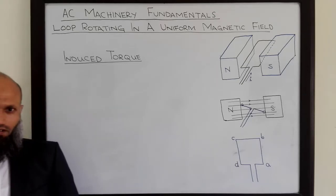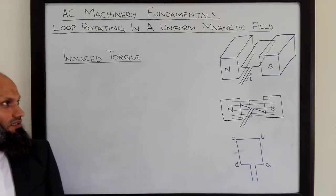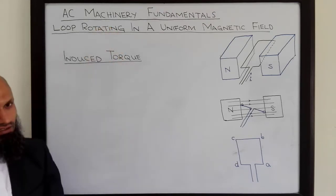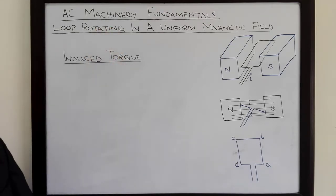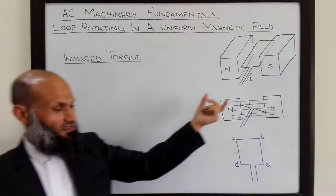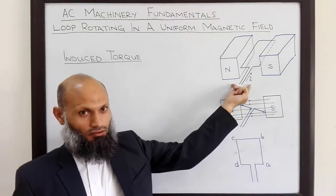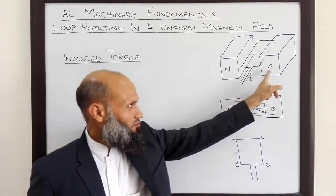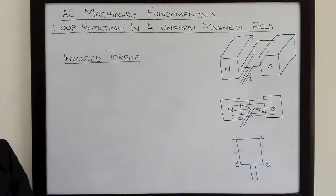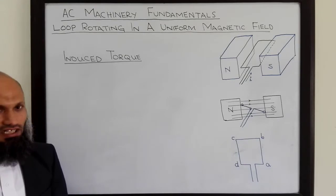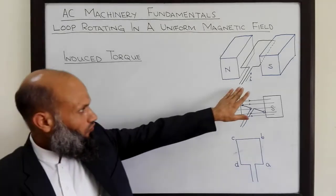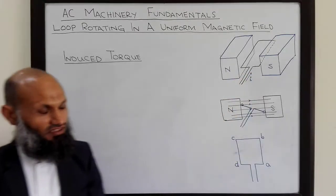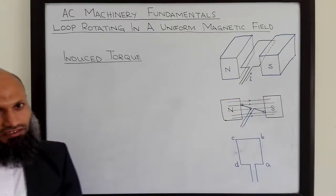We have started our discussion on fundamental principles which govern the working of AC machines. We started with the simplest case, that is a loop of wire rotating in a uniform magnetic field created by north and south poles. In the last lecture, we derived an expression for voltage induced in this coil rotating in this magnetic field. And in today's lecture,